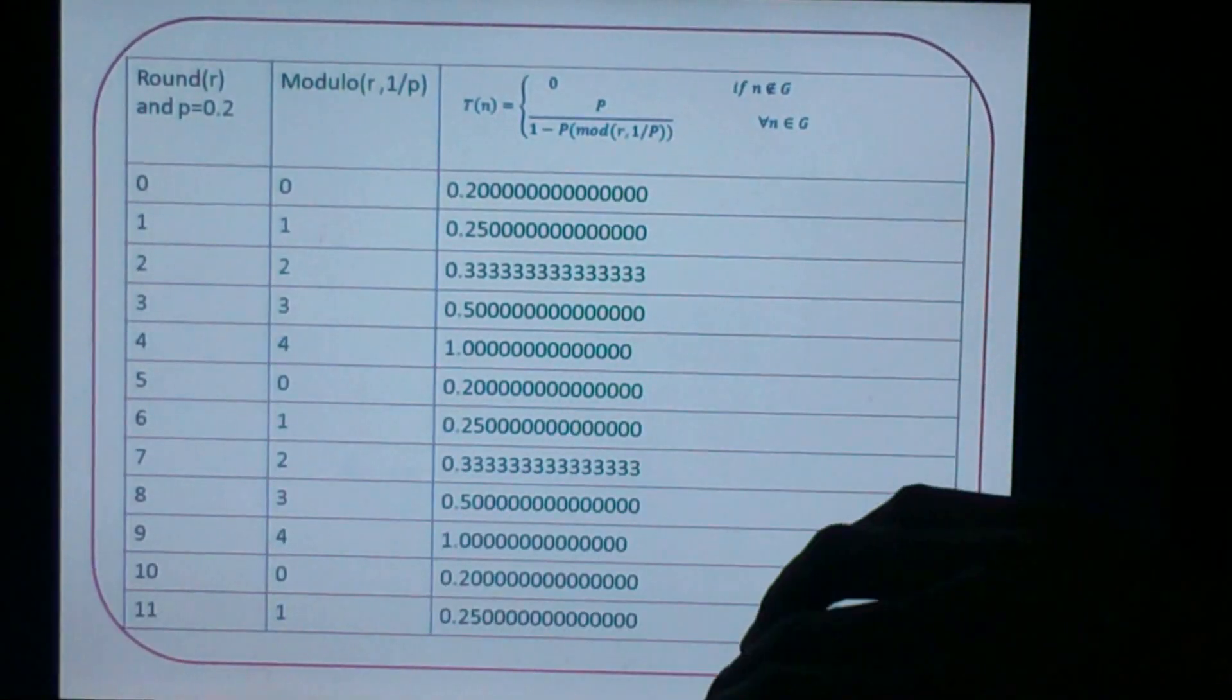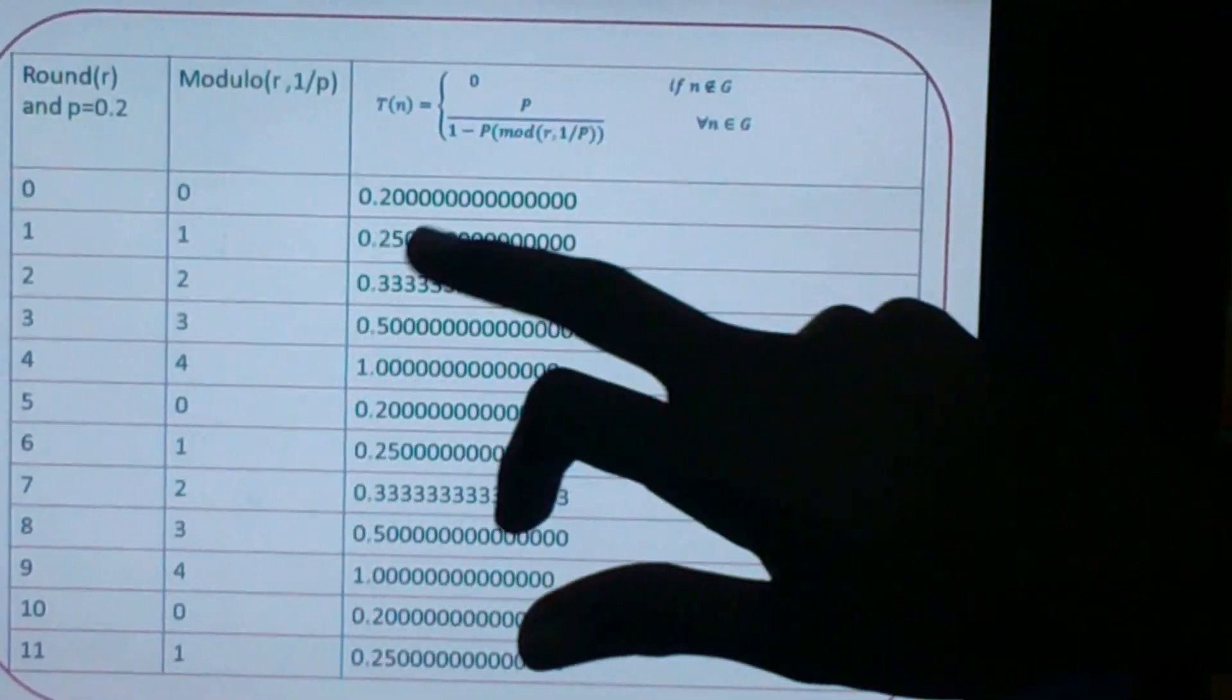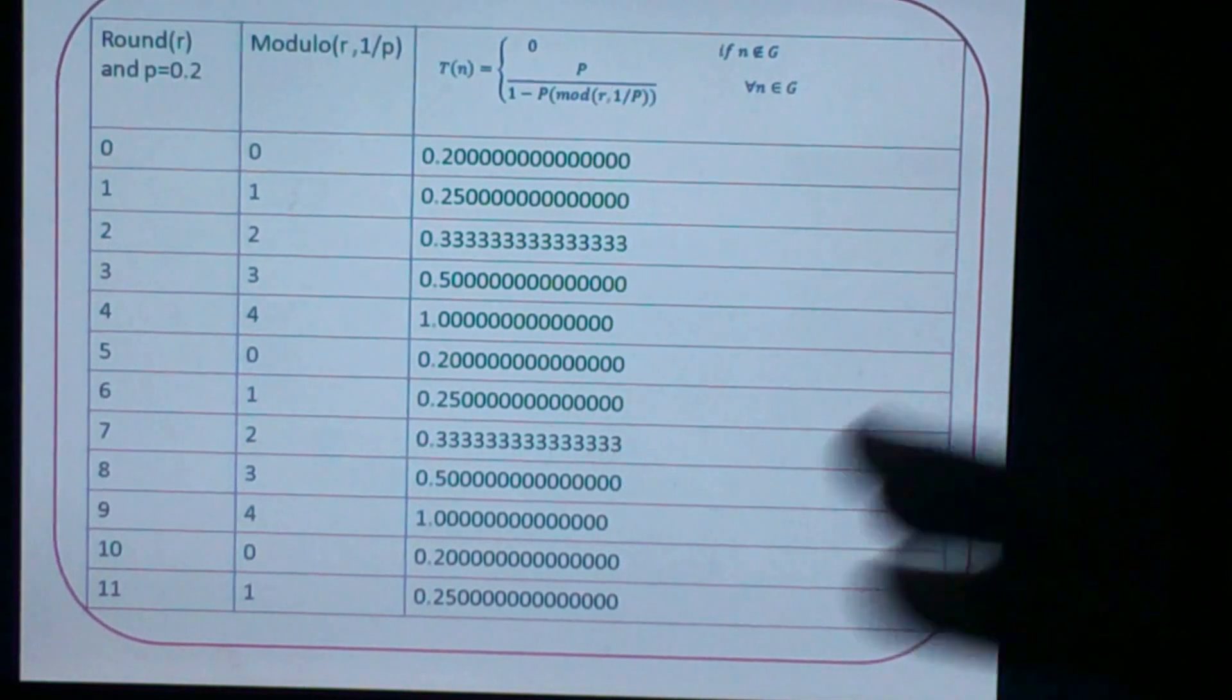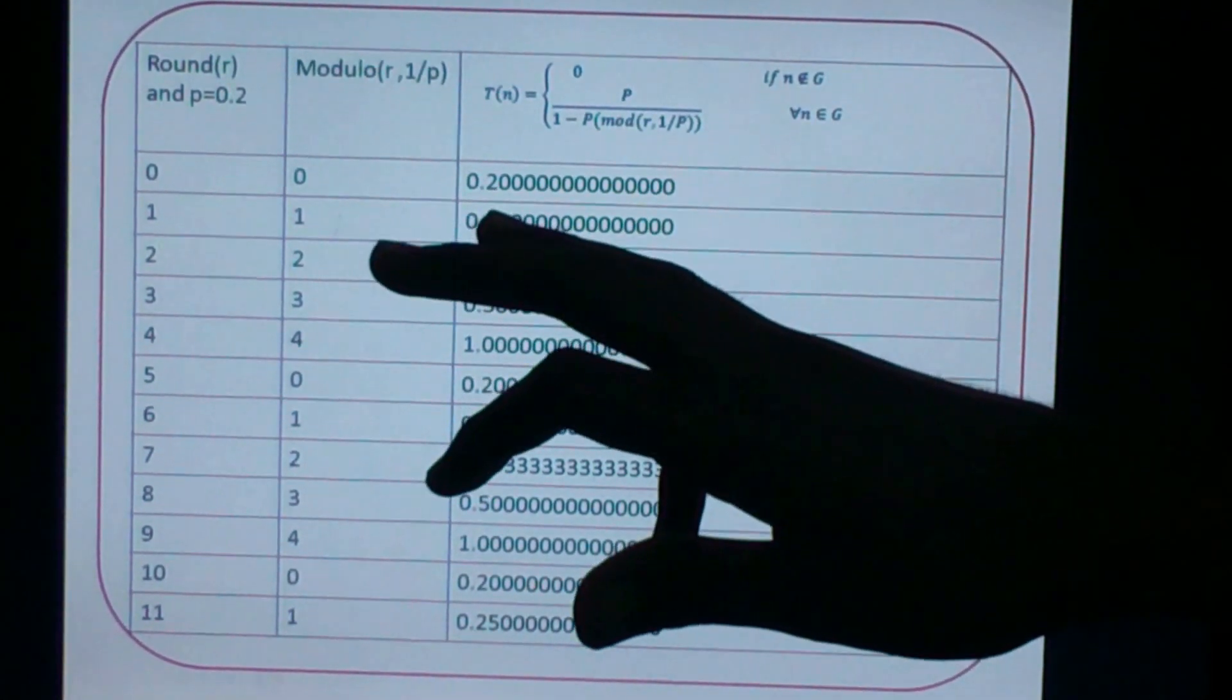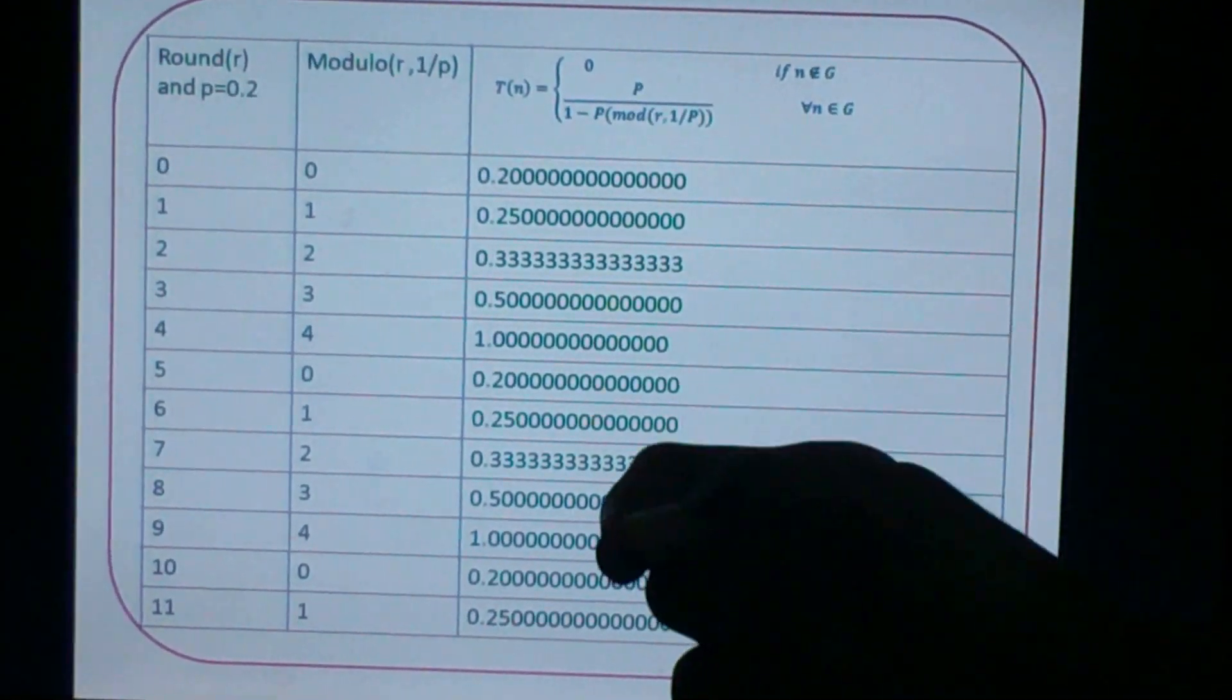This table contains the round and thresholding value. Here we can say that for the 0th round the thresholding value is 0.20. If we consider 100 nodes in a geometric area and having 0.20 thresholding value, they are able to be the candidate of cluster head selection.